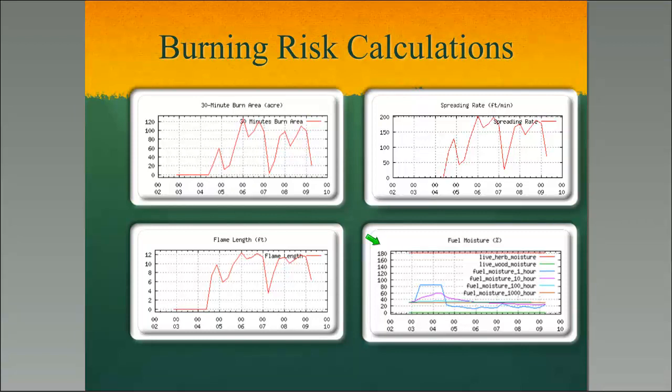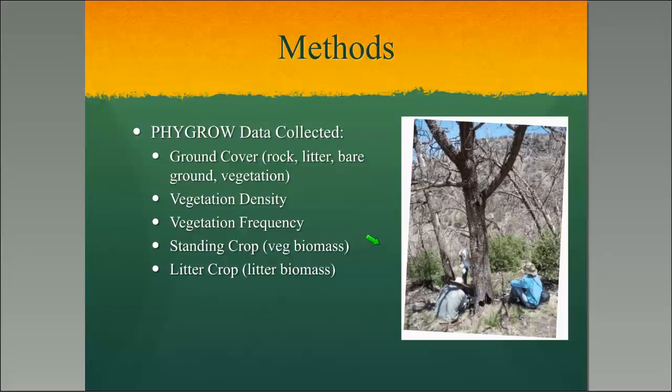Out in West Texas, FIGRO data collection is pretty extensive. We do point-based cover on the ground where we get rock, litter, bare ground, or vegetation hits. For FIGRO we also do vegetation frequency. We added density for this study as an extra measure on these burn severity maps, and we get vegetation biomass and litter biomass through clipping of a 40 by 40 centimeter frame. All that data gets entered into the FIGRO model — the ground cover gives us how much cover is on the ground for the evaporation model, what species are there, and in what proportions.